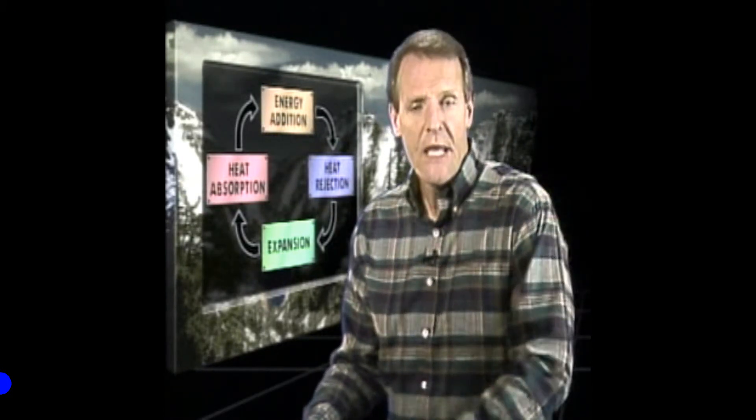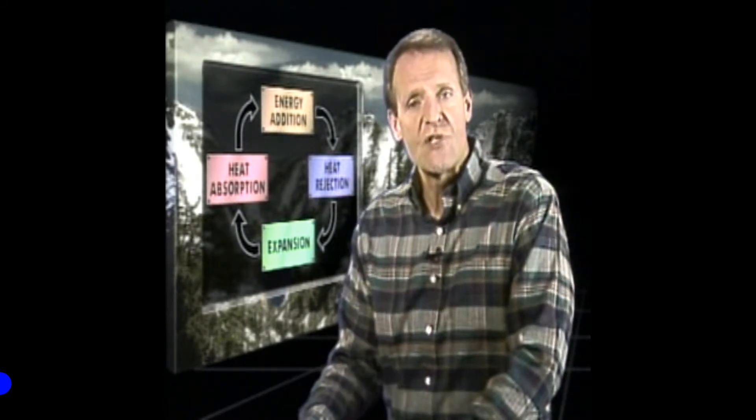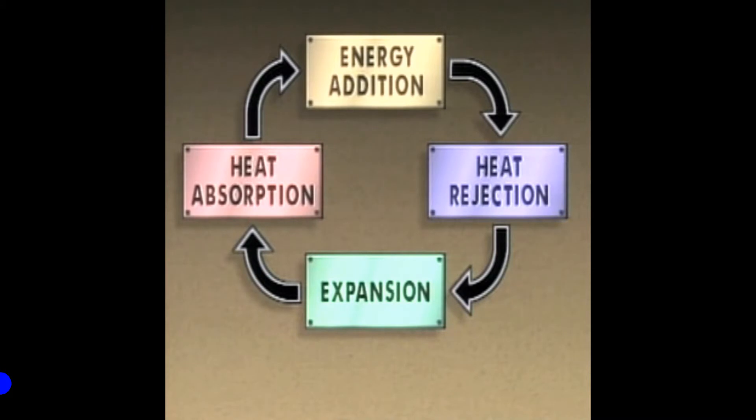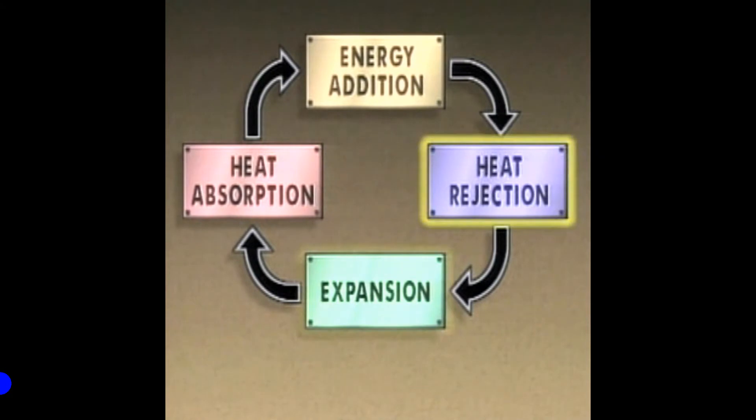The primary purpose of a refrigeration system is to remove heat from a substance. In most cases, removing heat lowers or maintains the temperature of the substance. To lower or maintain the temperature, a refrigeration system must be able to continuously absorb heat and then reject the heat from the system. This is done through several steps in what is called a refrigeration cycle. A typical vapor compression refrigeration cycle has four basic steps: heat absorption, energy addition, heat rejection, and expansion.